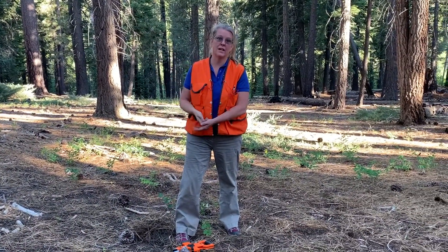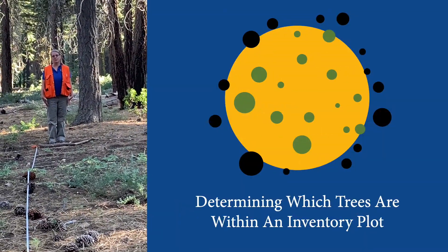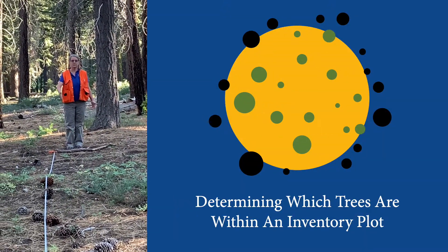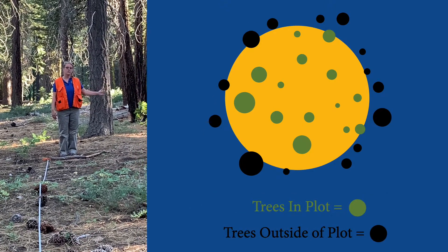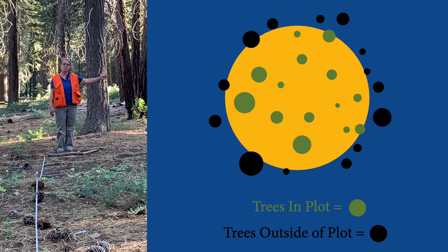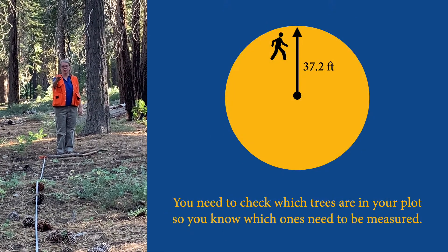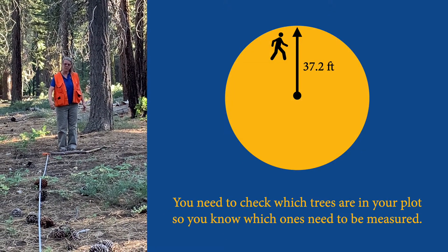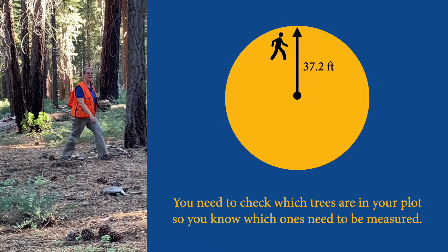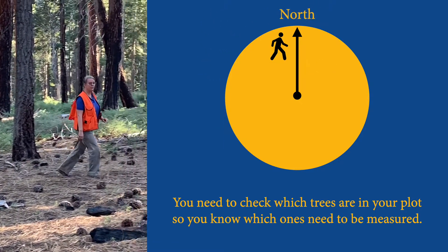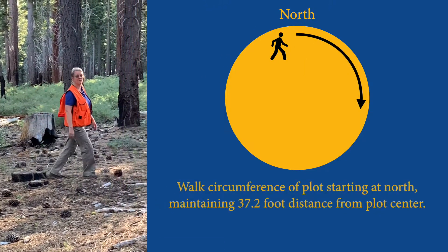I'm going to measure the diameter and height of each one of those trees. Now what I'm going to do is use this radius of the plot and walk around to identify which trees are in and which trees are out. I'm going to keep you, the viewer, at the center of my plot and try to walk this same 37.2 feet around. Everything on my left is going to be out and everything on my right is going to be in.